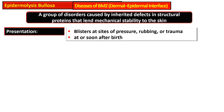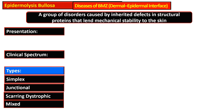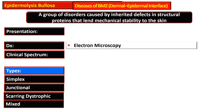Presentation is at the time of birth or soon after birth, with blisters at the site of pressure, rubbing, or trauma. The clinical spectrum may range from a minor problem to a widespread life-threatening blistering disease. There are four types: simplex type, junctional type, scarring and dystrophic type, and mixed type.